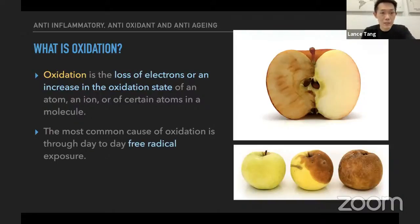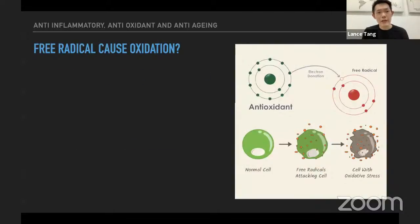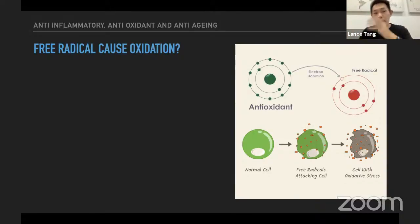We are exposed to free radicals no matter what. Even now, listening to this online meeting, you are already exposed because you are looking at your screen — the blue light from your screen also creates free radicals. Free radicals cause oxidation. The free radical is the one that causes the imbalance of electrons — it always has an extra or missing ion, because it goes and grabs ions from other balanced atoms and molecules.